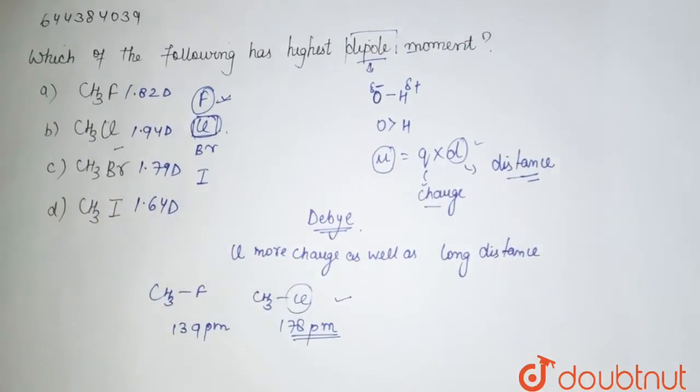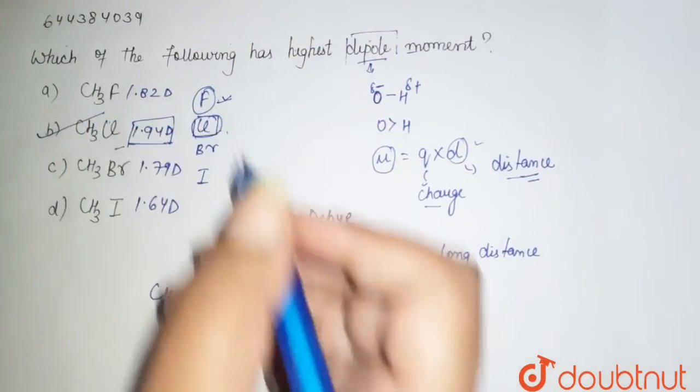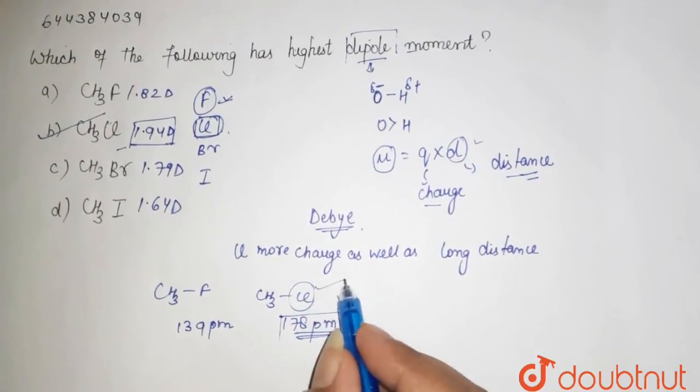These are the dipole moments of the given species. So CS3Cl has greater dipole moment. And why so? Because it has more distance and is more electronegative.